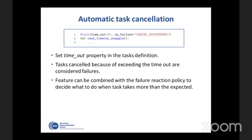The second type of mechanism is automatic task cancellation. As with the previous one, it is defined in the task definition, where we can specify a timeout property to indicate the maximum expected duration of the task. This mechanism can be combined with the on-failure policy. For instance, in this example, this task has an expected duration of 50 seconds. If the task lasts more than 50 seconds, it will be considered failed and we will cancel all successors of this task.